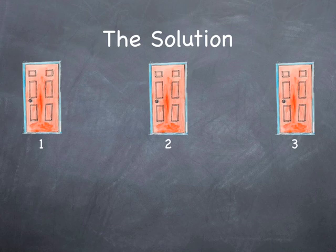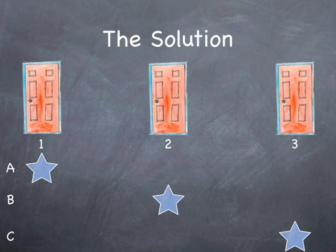There are three ways the prize can be hidden behind a door. It can be behind door number one, door number two, or door number three. There are also three ways you can choose a door. You can choose door number one, two, or three.